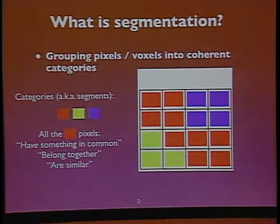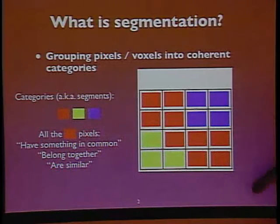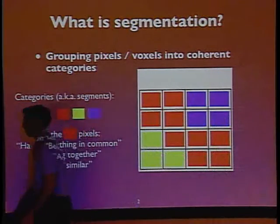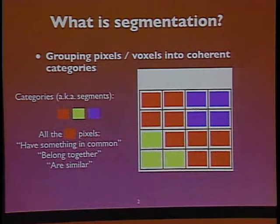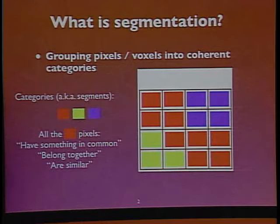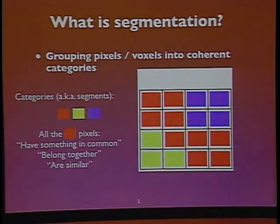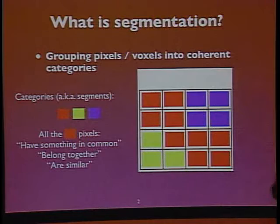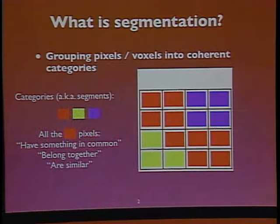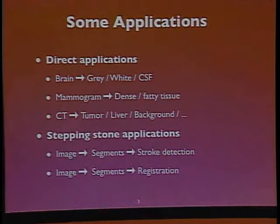What we do is take each of our pixels, a.k.a. voxels, and assign them to one of a small number of categories. An obvious question is: what do these categories represent? This is vague because different people have different senses of why pixels should be grouped together, but the idea is that it's a low-level reason — all of the pixels in the same category have something in common. They belong together; they are similar.